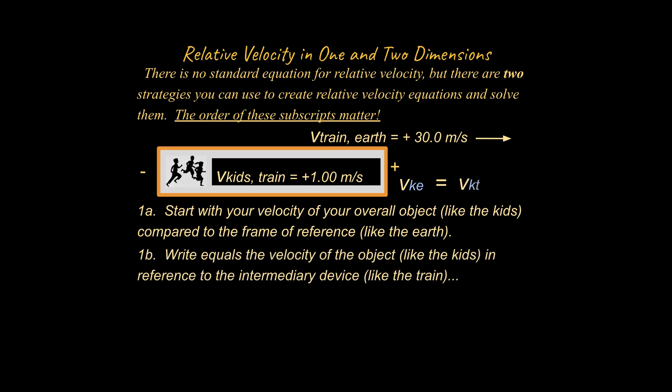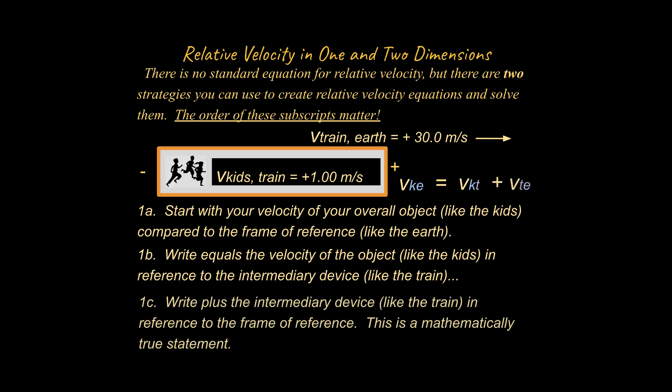All right, and then your next step is going to be to write that is equal to the velocity of the object, like the kids, in reference to an intermediary device, like the train. An intermediary device, I mean something that's in the middle that connects two other ideas. So in this case, the train connects the kids to the Earth, you could say. So the train is going to be our intermediary device right here.